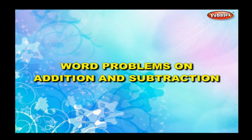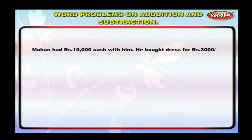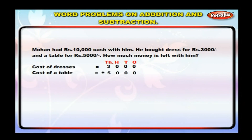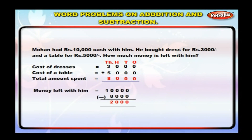Word problems on addition and subtraction. Mohan had rupees ten thousand cash with him. He bought a dress for rupees three thousand and a table for rupees five thousand. How much money is left with him? Cost of dress: three thousand. Cost of table: five thousand. Total amount spent: three thousand plus five thousand is equal to eight thousand. Money left: ten thousand minus eight thousand is equal to two thousand. Money left with Mohan is rupees two thousand.